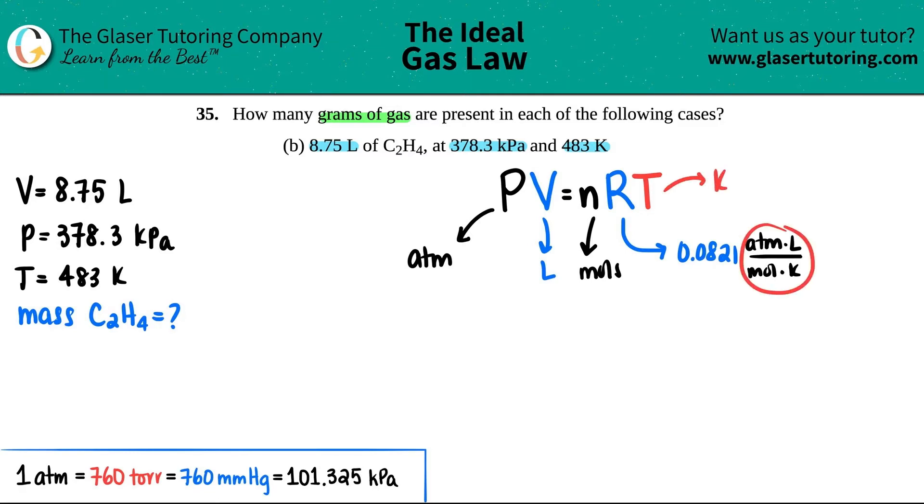These units have to match with what the R constant is. Now let's see, uh-oh, they gave me a kilopascal. I need to convert this into atm. So we just have to know what equals atm. Just remember these big four pressure units and they're all equal to each other. Pick the two that you need to work with.